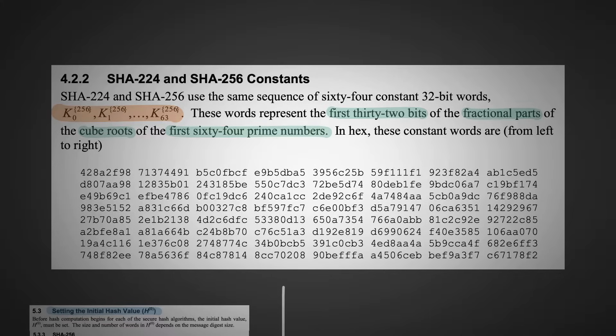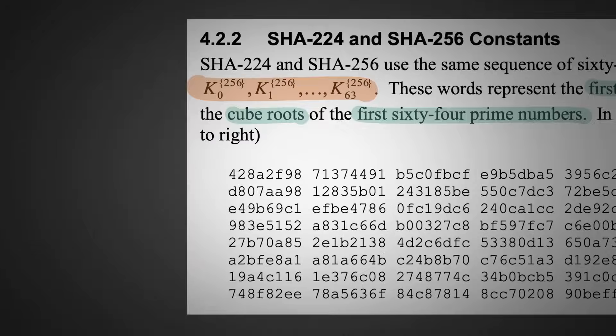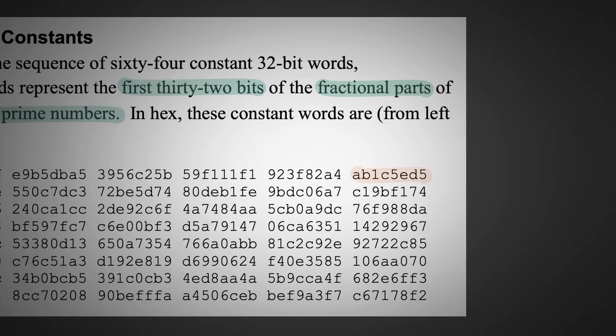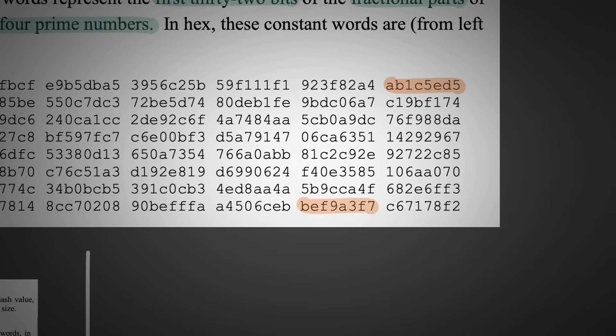I'm not going to go through how to derive them because it's the same as what we just did with the square root of 2. Here's all you need to know. Here is K0, here is K7, and here is K62.